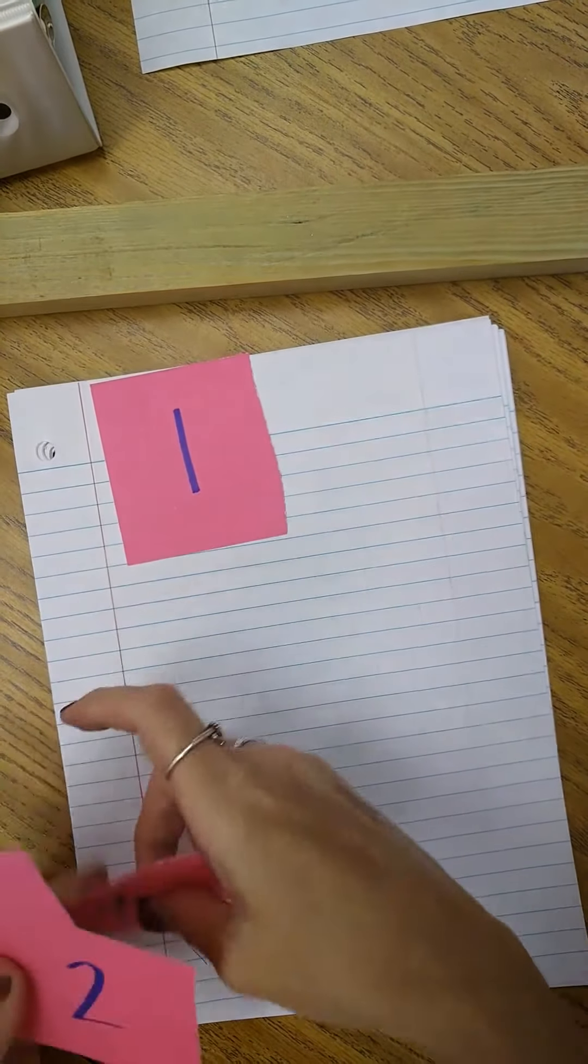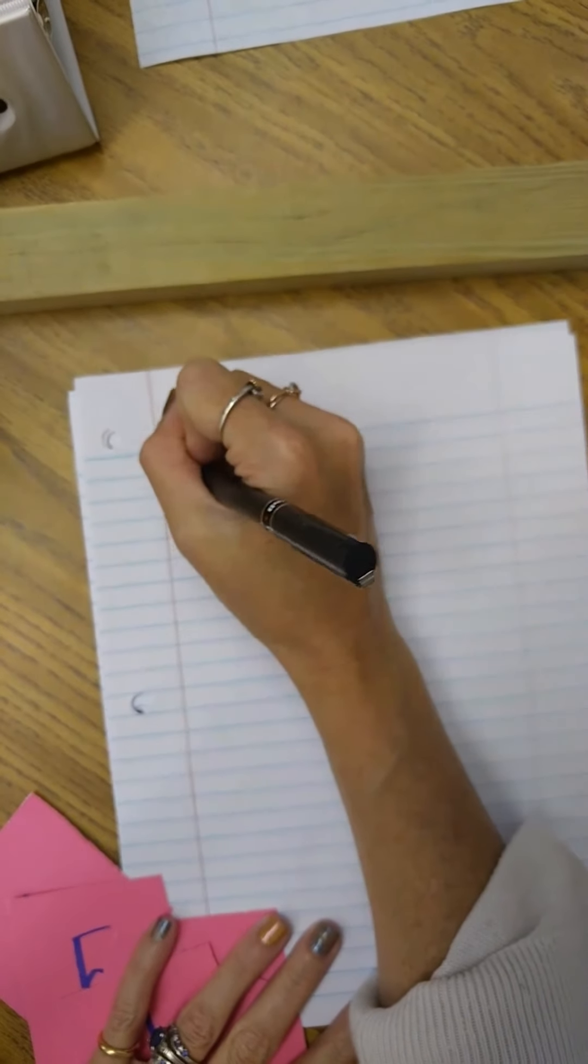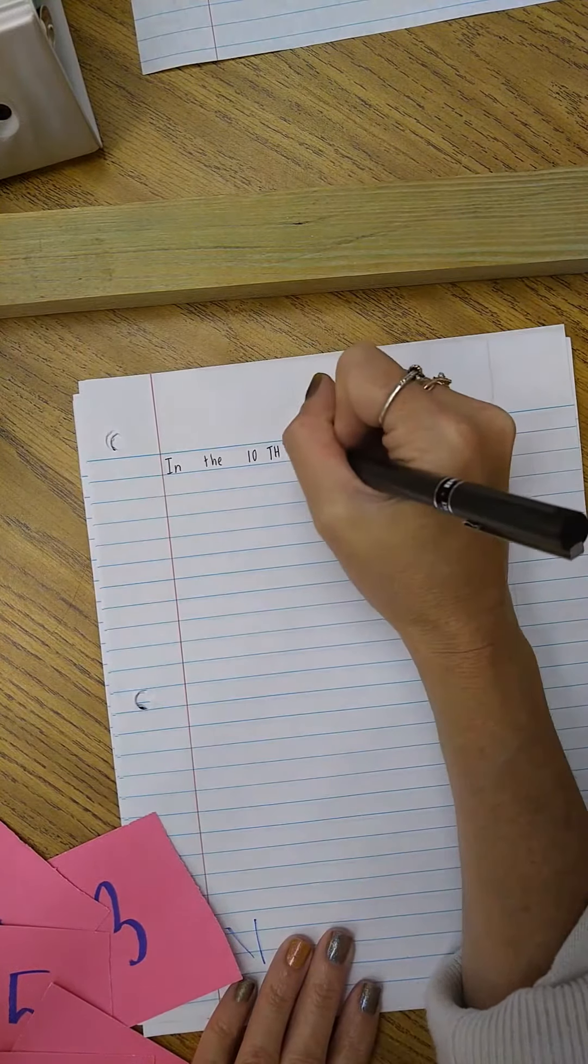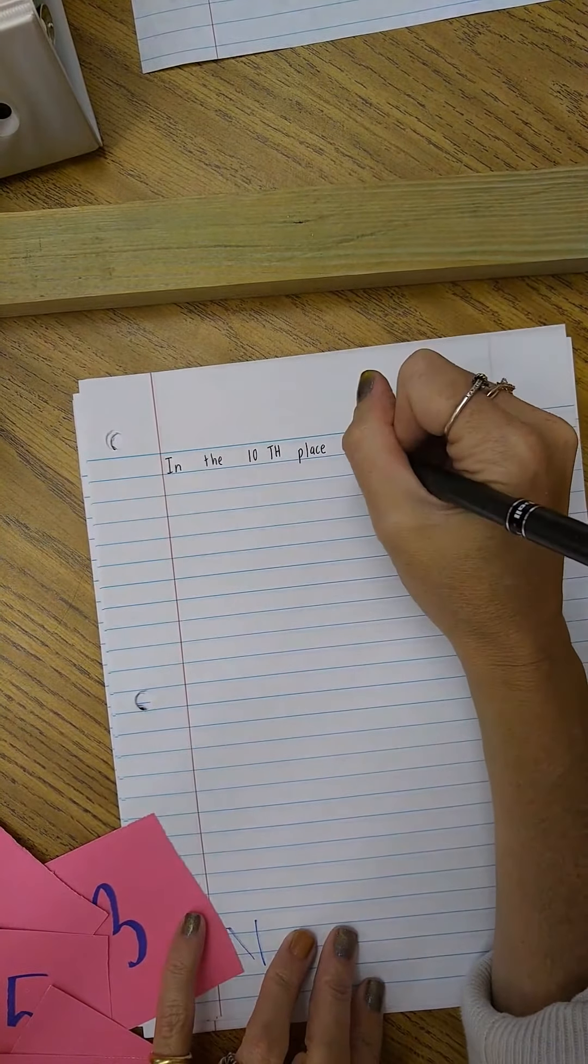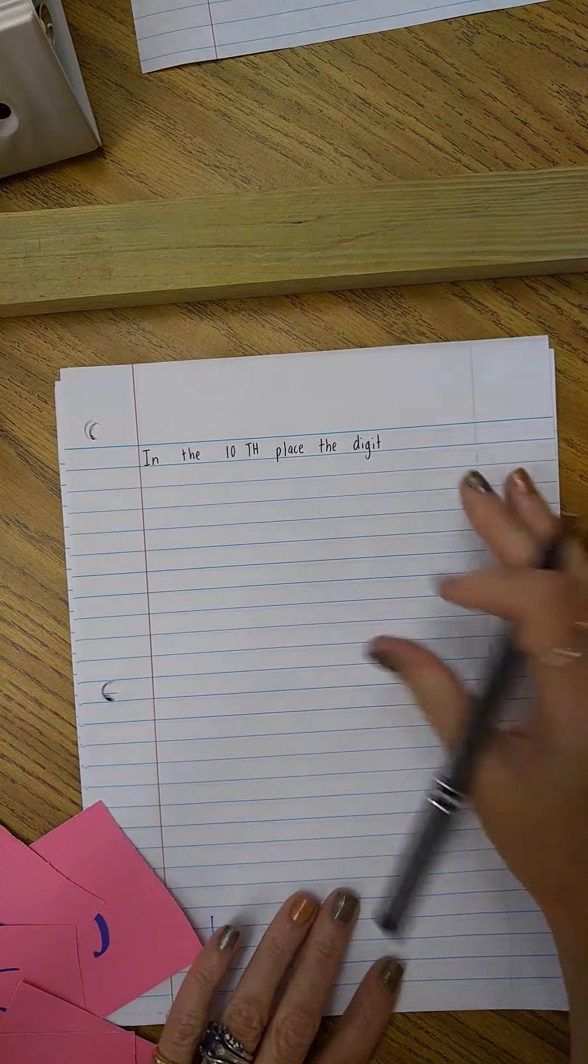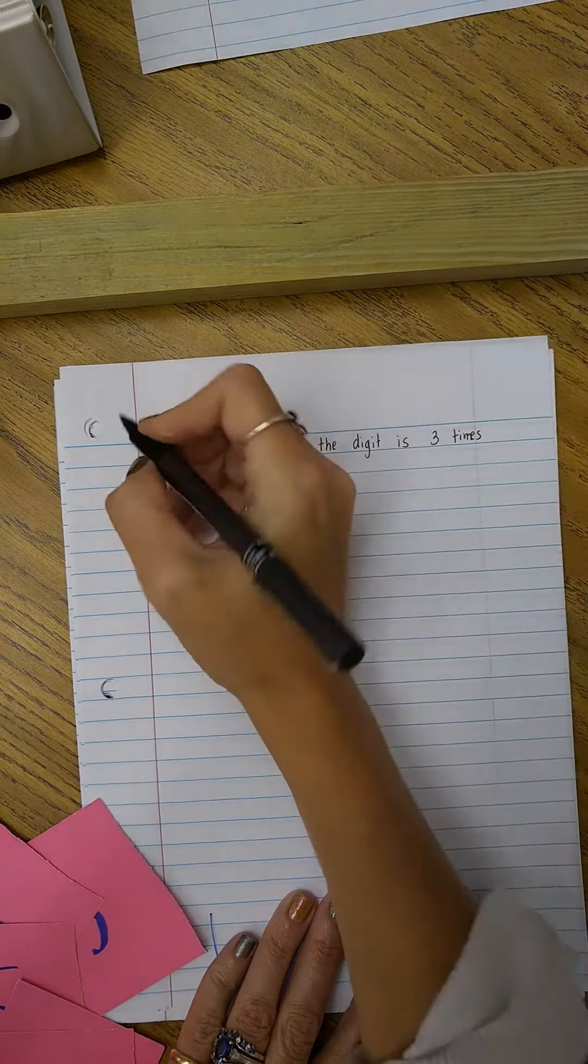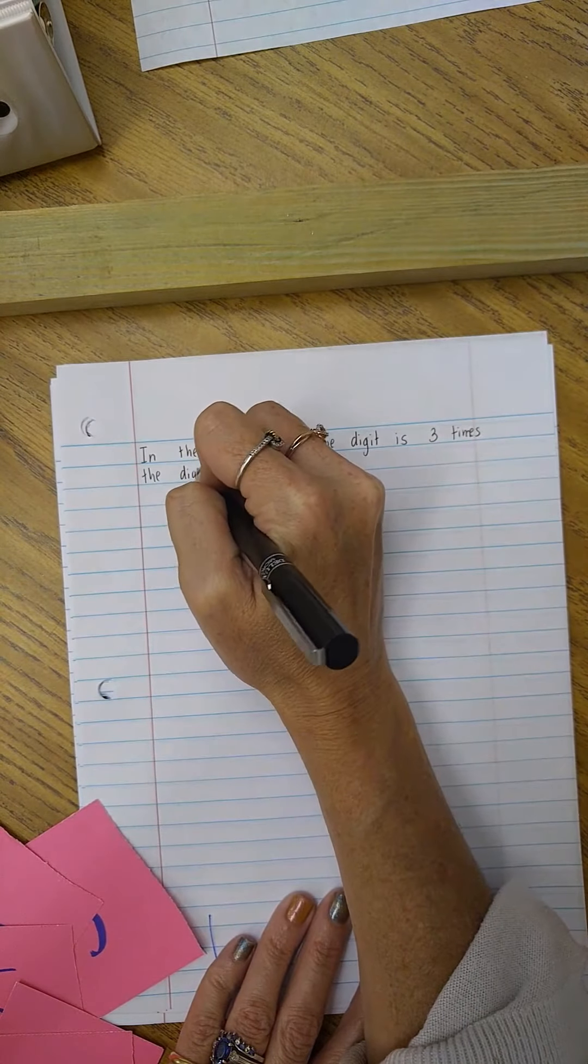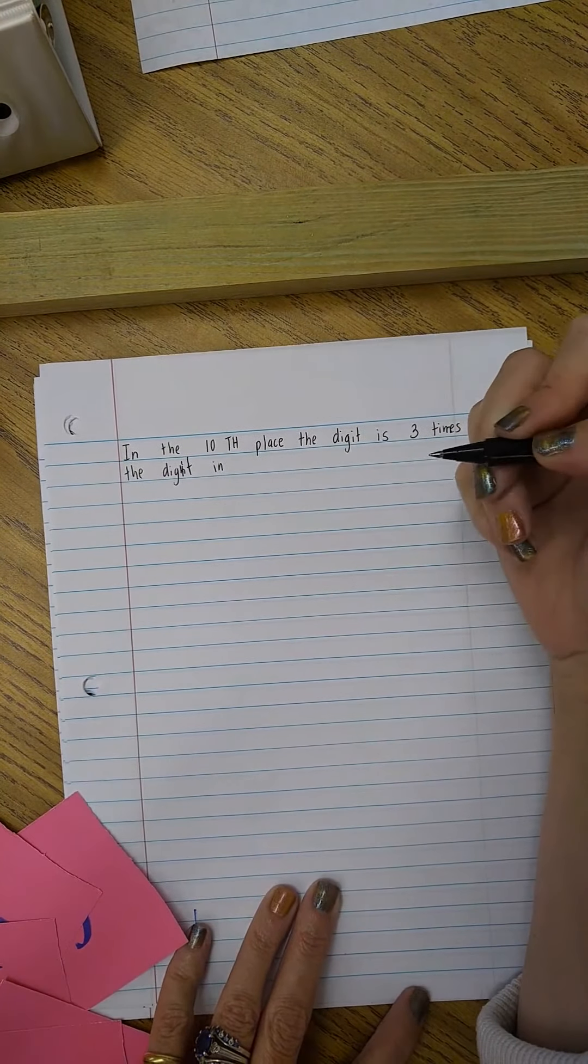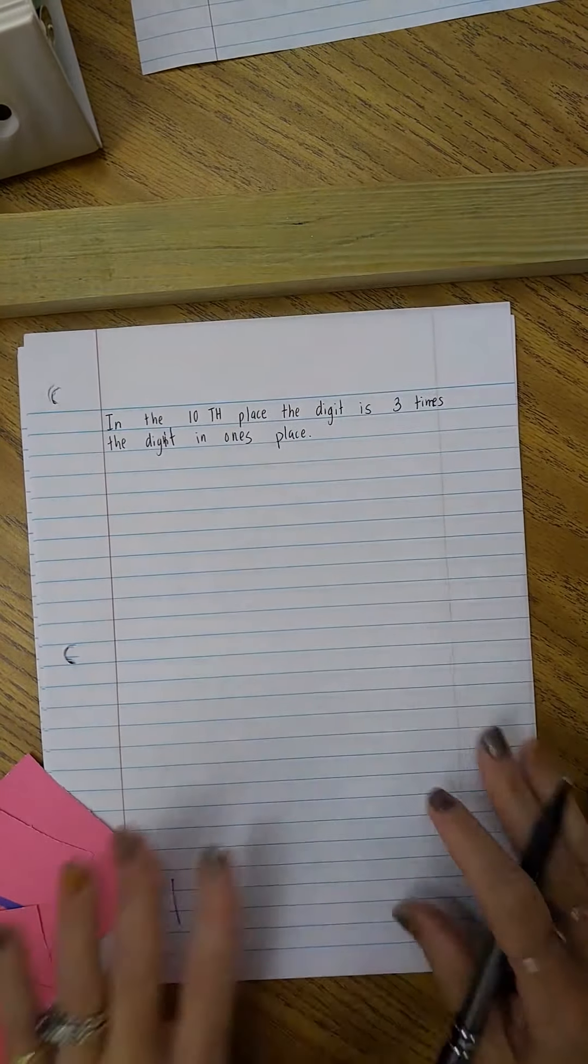So the guideline, and this is understanding place value which is how this relates to what we're learning, the first guideline may be: in the ten thousands place, the digit is three times the digit in the ones place. Alright, so that's the first stipulation.